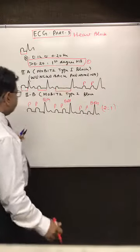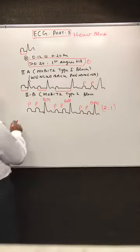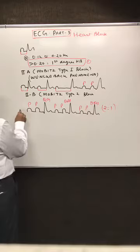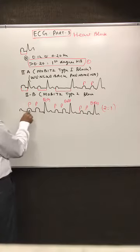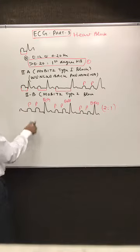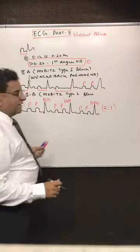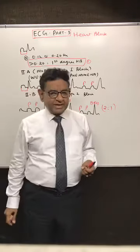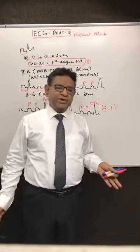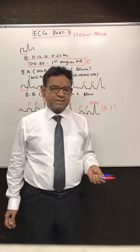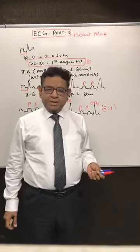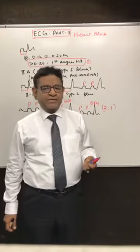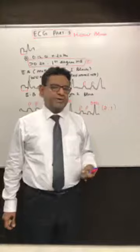It is important to note that the ratio can be any fixed ratio — it could be 2:1 or even 3:1. Different ratios can occur, but what is fixed is that you are getting a constant number of P waves followed by one QRS complex.